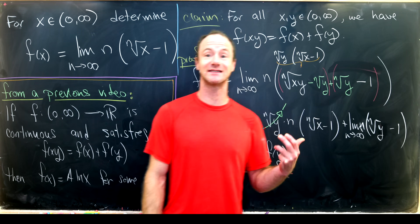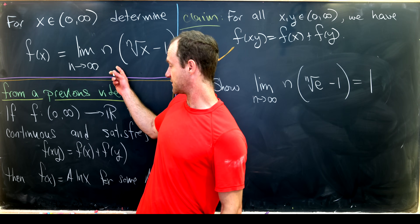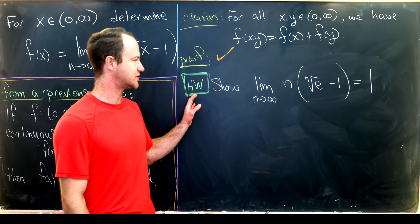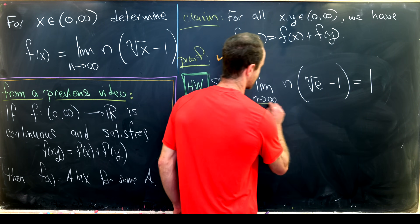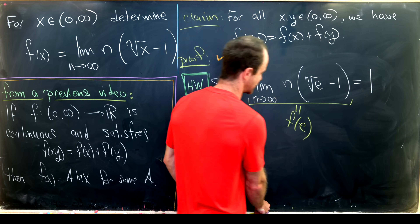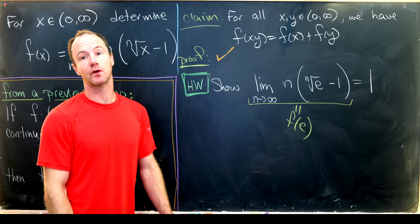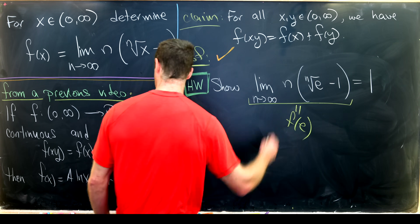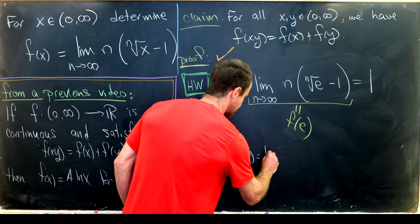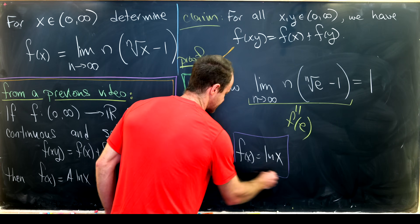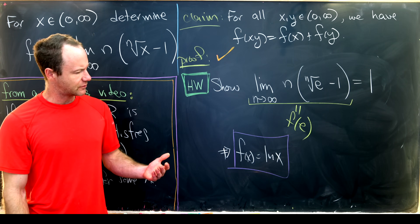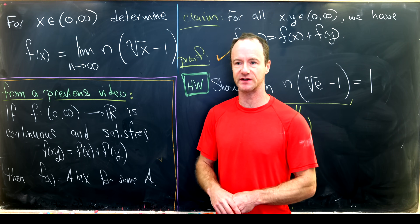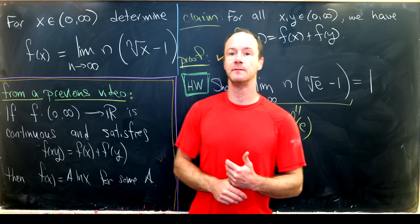We just finished showing our function is continuous and satisfies the functional equation. As a homework exercise, show that if we plug in the number e into this limit — evaluating f(e) — we get the number 1. If f(e) = 1, then f(x) = ln x, which matches exactly what we found from the first method. If you'd like to see the video on this functional equation, it's called something like 'a functional equation from my favorite textbook' and should be linked on screen. That's a good place to stop.